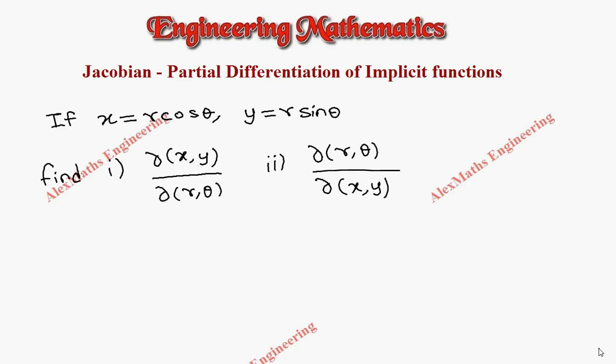Hi students, this is Alex. In this video we are going to discuss a problem related to Jacobian partial differentiation of implicit functions where x = r cos θ and y = r sin θ. In the first division we have to find ∂(x,y)/∂(r,θ).